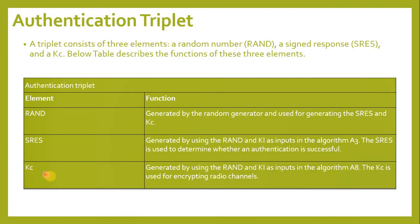KC is generated by using RAND and the key as inputs in algorithm A8. The KC is used for encrypting radio channels.